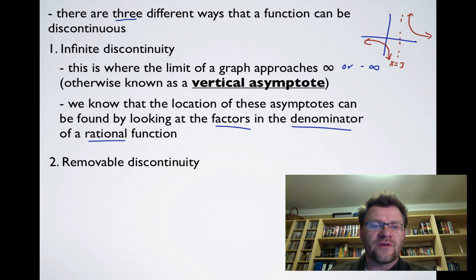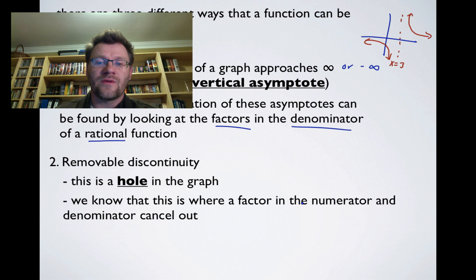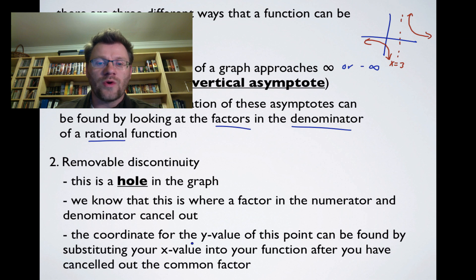Our second type of discontinuity is a removable discontinuity. And this is what we've been calling a hole in the graph. And we know that this is where the factor of the numerator and the denominator cancel each other out. And the coordinate for the y value of this point can be found by substituting your x value into your function after you have cancelled out the common factor. And we've actually seen these functions when we were doing limits in the last couple of lessons as well.